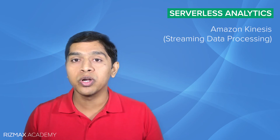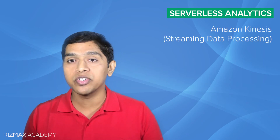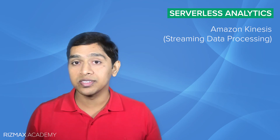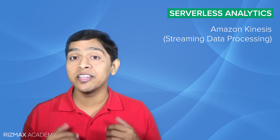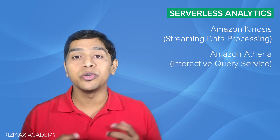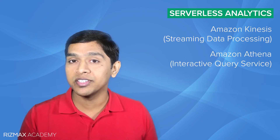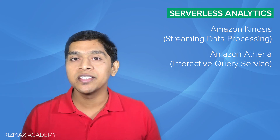Coming to analytics, Amazon provides two web services: Amazon Kinesis and Amazon Athena. Amazon Kinesis is a platform for streaming data applications, so if your application requires you to work with or analyze streaming data in real time, you may want to use Amazon Kinesis. Amazon Athena is an interactive query service that you can use to query your data stored in Amazon S3 using standard SQL.